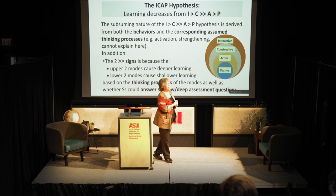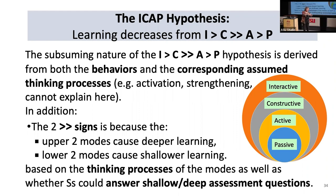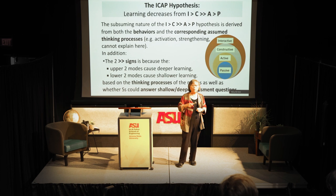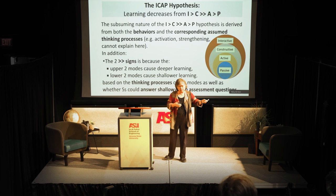Now the ICAP hypothesis. It states that learning decreases from I to C to A to P. Note there are two greater-than signs between C and A, so I and C are much, much better than A and P. The upper two modes — Interactive and Constructive — can help you get deeper learning, whereas the lower two only produce shallow learning.